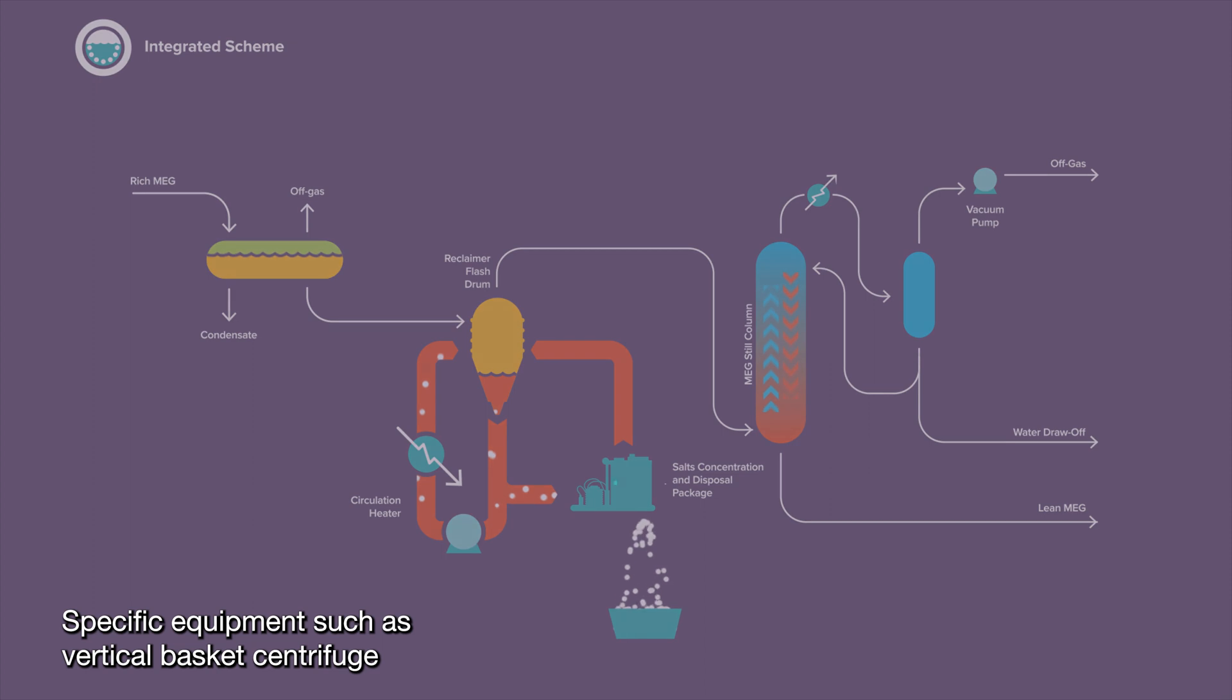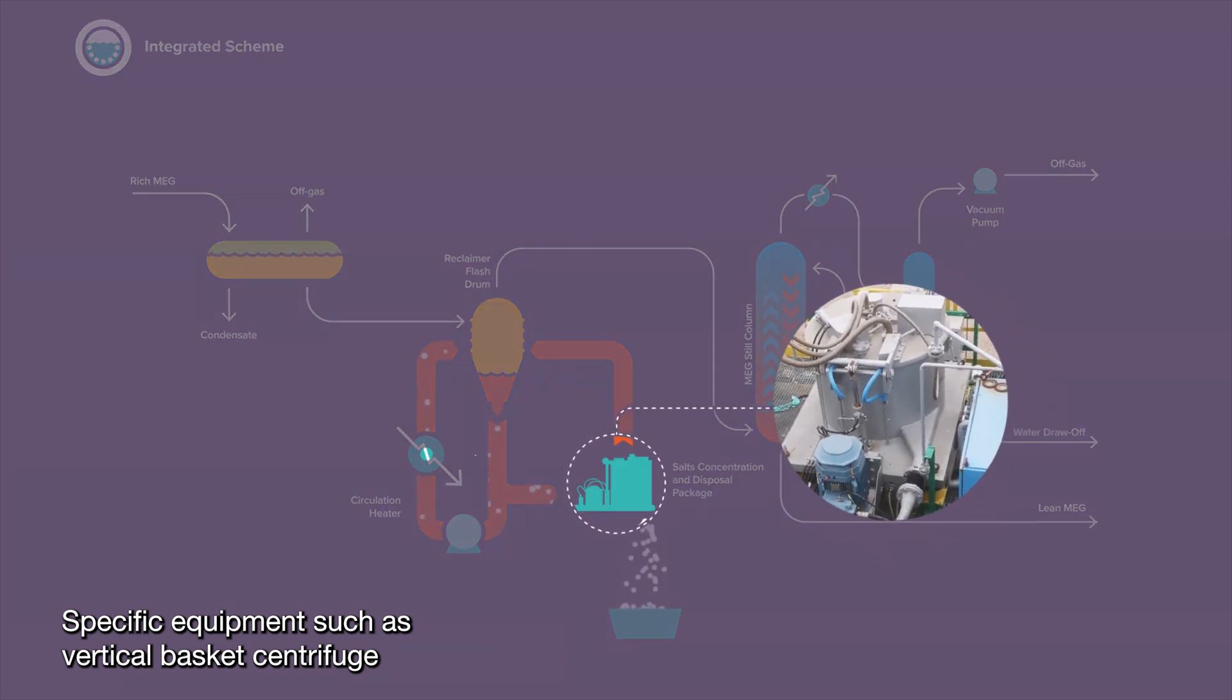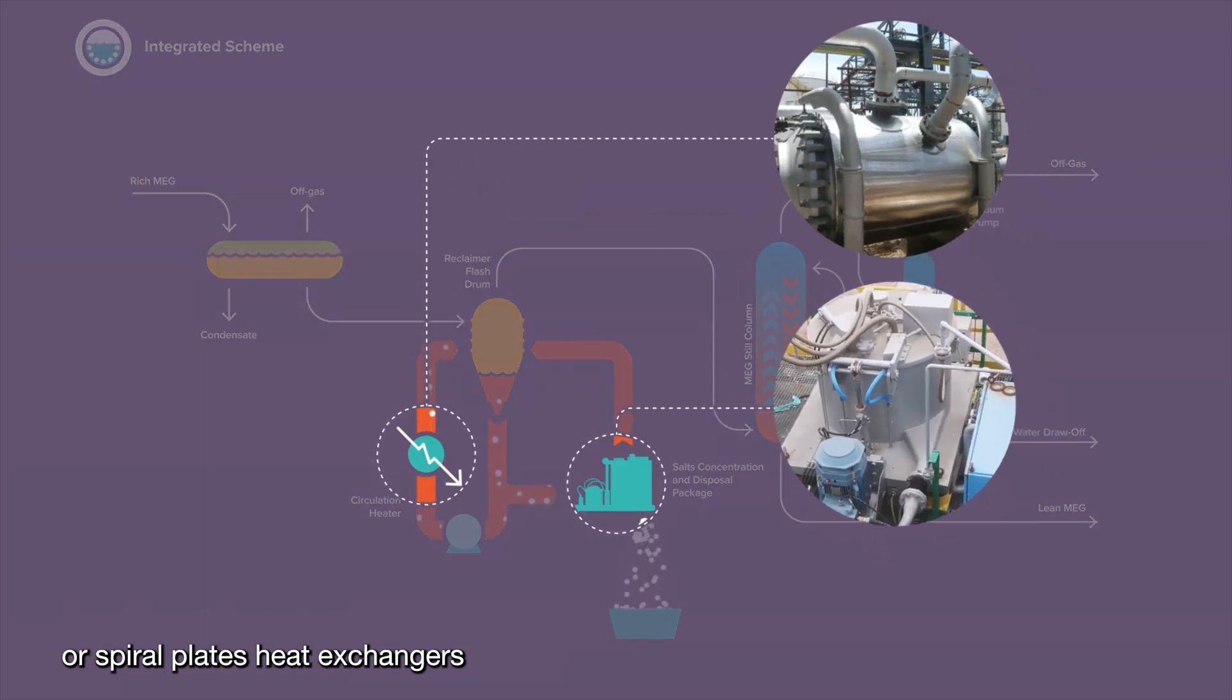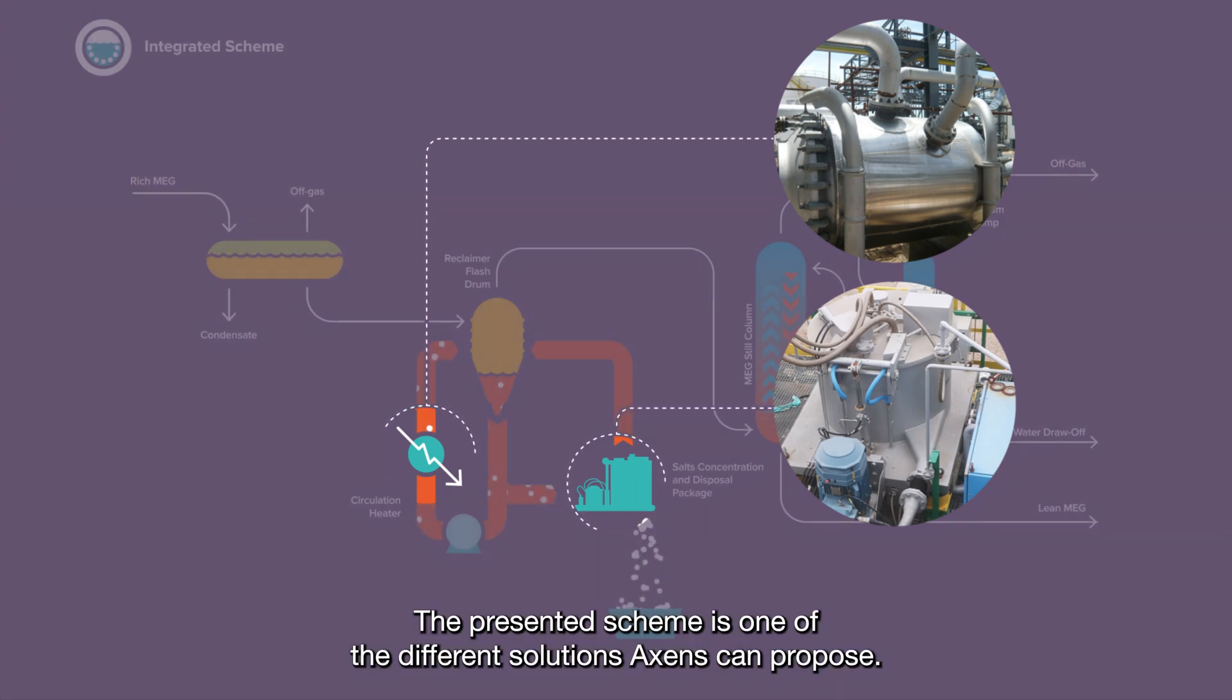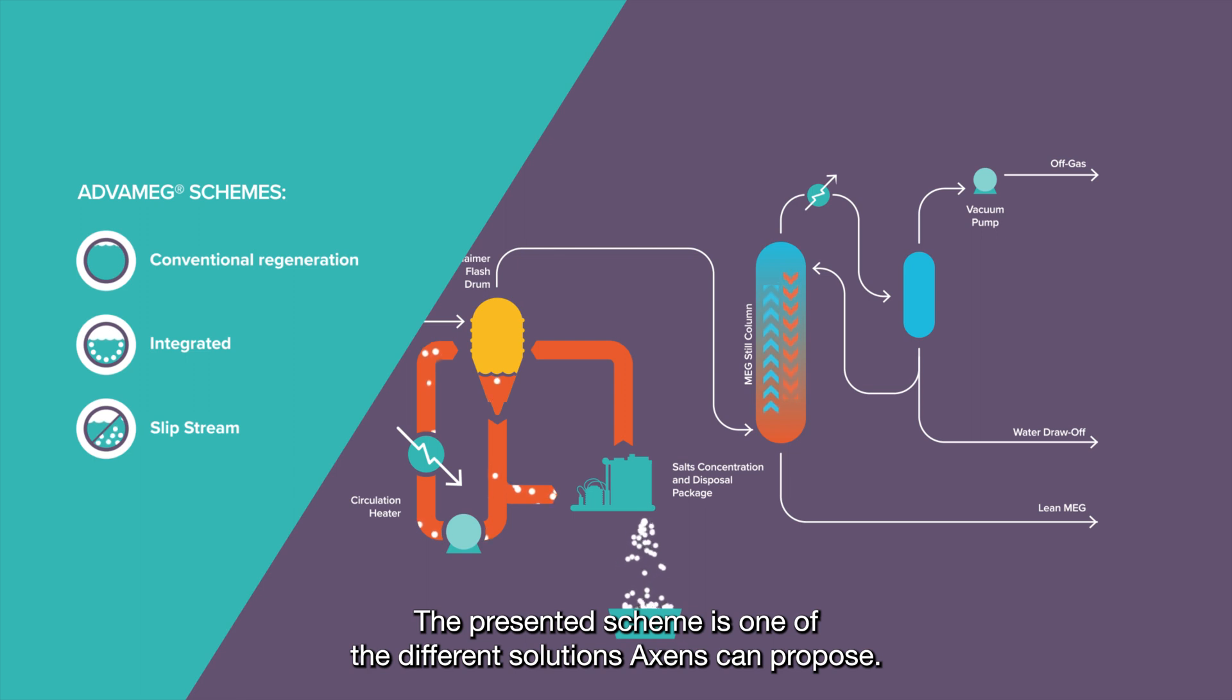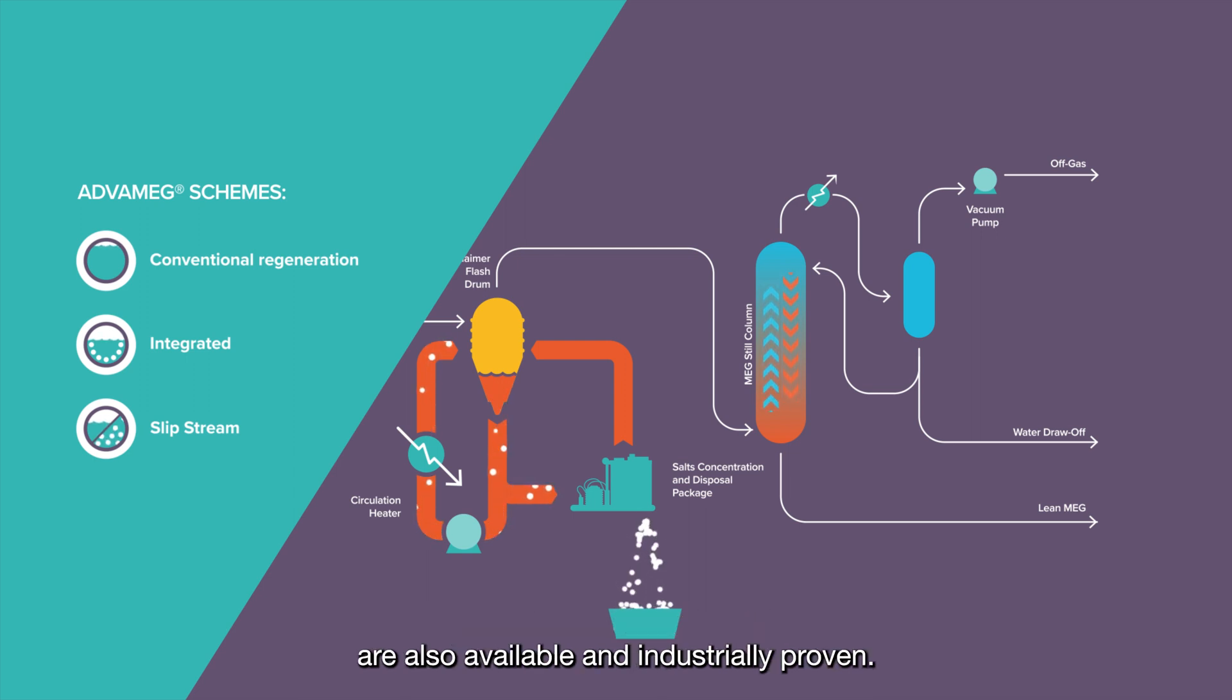Specific equipment such as vertical basket centrifuge or spiral plates heat exchangers are selected for their reliability in slurry services. The presented scheme is one of the different solutions AXENS can propose. Other schemes adapted to different projects constraints are also available and industrially proven.